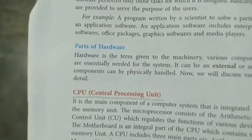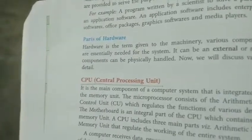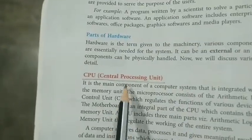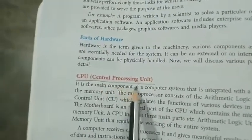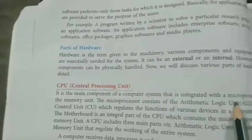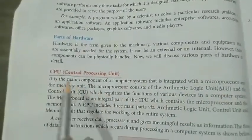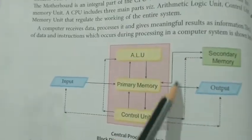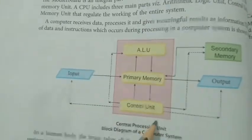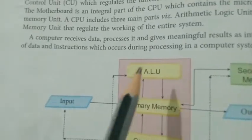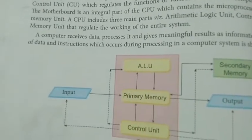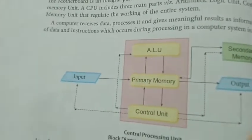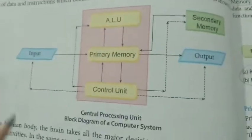The most important part is the CPU, which we call the brain of the computer or the main processing unit. It is the main component of a computer system, integrated with the microprocessor and the memory unit. This will be clearer with the help of the diagram shown here.